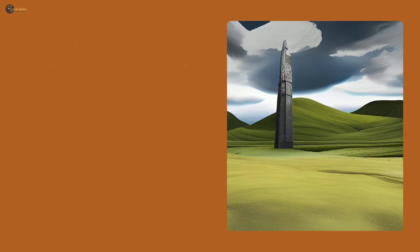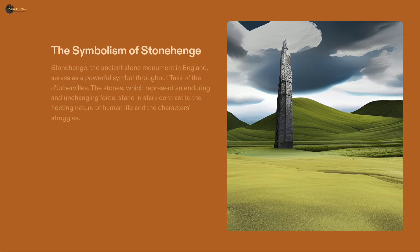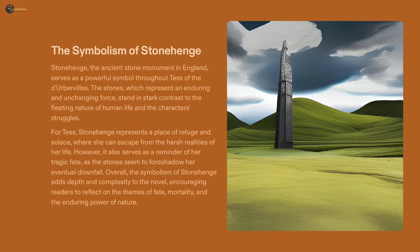As we explore the world of Tess of the D'Urbervilles, Stonehenge stands out as a powerful symbol. This ancient stone monument in England represents an enduring and unchanging force, in stark contrast to the fleeting nature of life. For Tess, Stonehenge serves as a refuge and solace while simultaneously being a reminder of her tragic fate. Through this symbolism, Thomas Hardy encourages readers to reflect on the themes of fate, mortality, and the enduring power of nature.